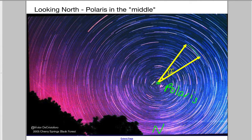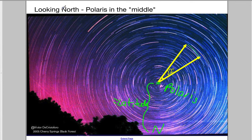You should also remember that the angle from Polaris back into the ground is equal to the observer's latitude. So you can calculate a lot of things from a photograph such as this.